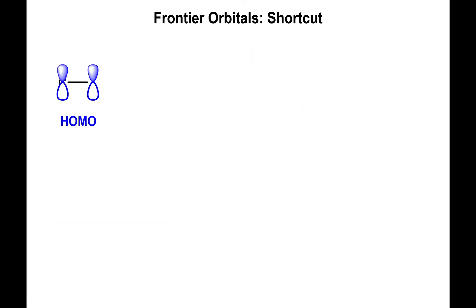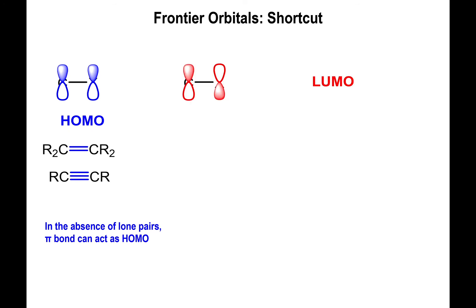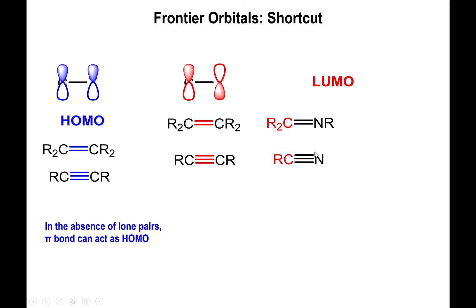Pi bonds — which make up the second or third lines in multiple bonds — can act as HOMOs in the absence of lone pairs and attack LUMOs. They can attack other alkenes or alkynes with pi star character, or carbons bearing electronegative elements. For example, in a carbon–oxygen double bond, the carbon becomes electron-deficient and more positively charged, making it susceptible to attack by electron-rich pi systems.